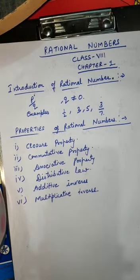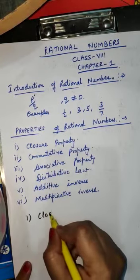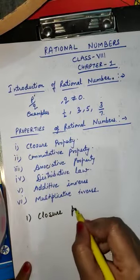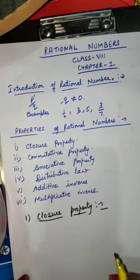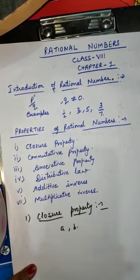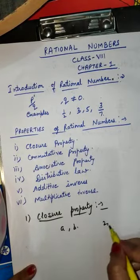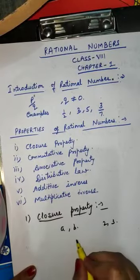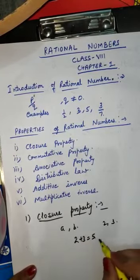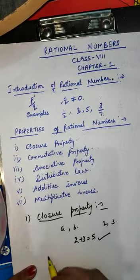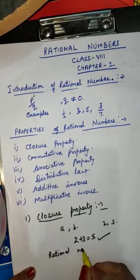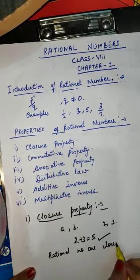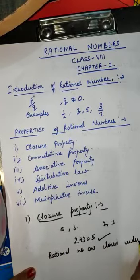Now let us start with the first, that is Closure Property. Let we have two rational numbers A and B — any two rational numbers, maybe 2 and 3. Then 2 plus 3 is equals to 5, which is also a rational number. This means rational numbers are closed under addition.